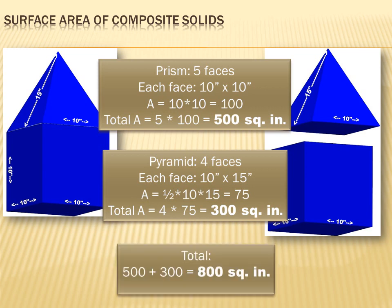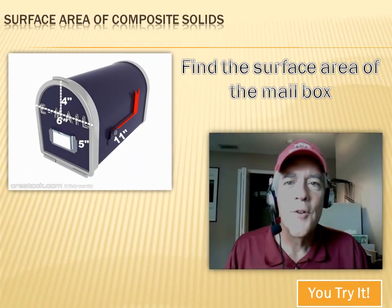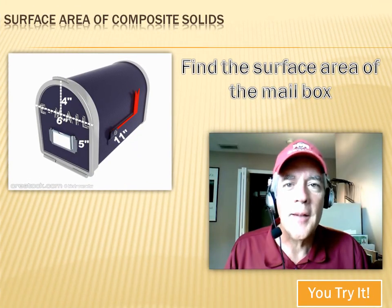Now all I've got to do is total those two up. The prism is contributing 500 square inches. The pyramid is contributing 300 square inches. So the total surface area is 800 square inches. Try this one — hit the pause button, do the problem, and then hit your forward key.